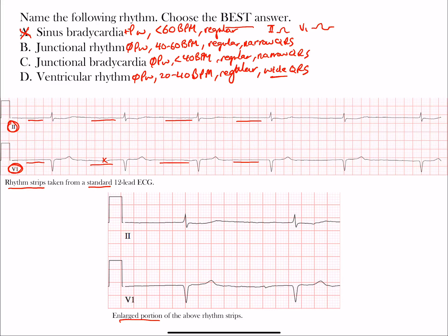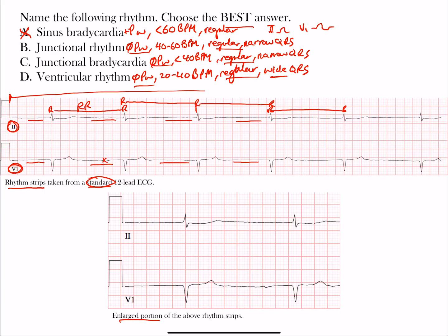So answer choices B, C, and D all have no P waves, meaning rate and QRS width will help differentiate them. We have a regular rhythm — the R-to-R intervals are all the same. Now let's find the rate. On a standard ECG, the strip from beginning to end is 10 seconds; 10 seconds times 6 equals 60 seconds, which is one minute. So we count the number of QRS complexes and multiply by 6 to get an estimate in beats per minute.